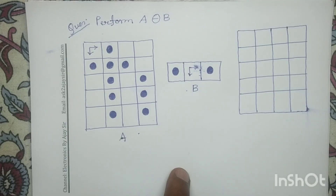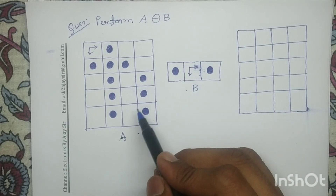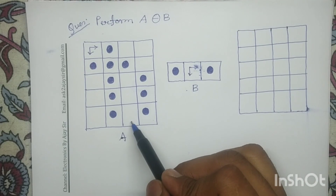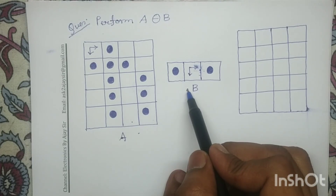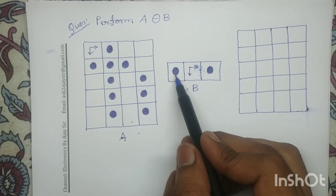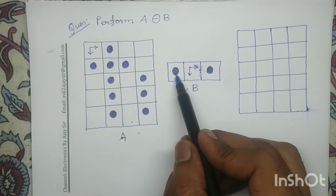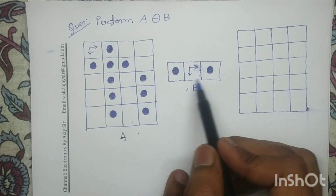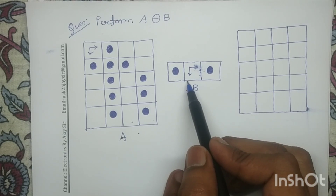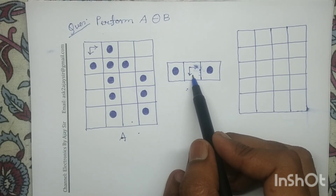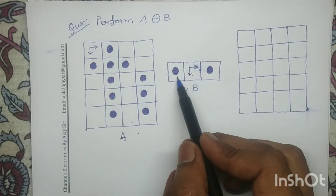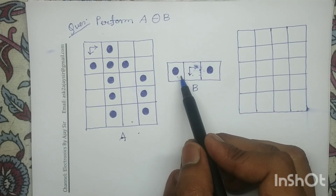Now remember, in erosion operation we will target the object pixels. In both the input image A and the structuring element B, the dark circle represents the object pixel. In the structuring element, this is the center, and on the left side of the center there is an object pixel.